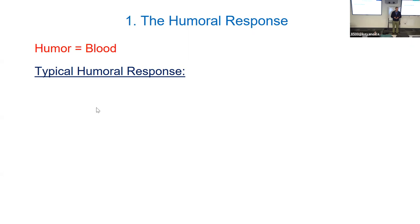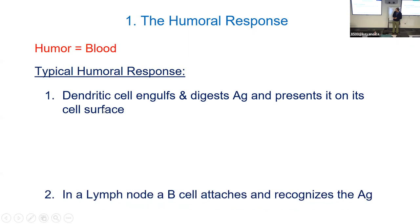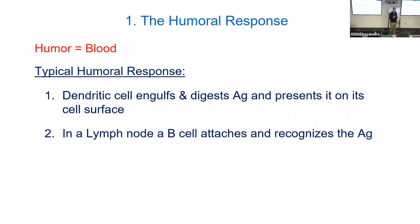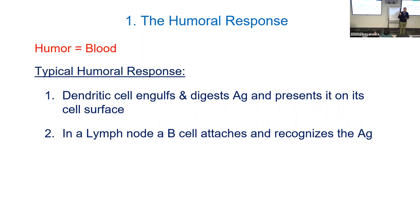That's not necessarily always the way this response works. Often this response also involves dendritic cells. Those dendritic cells are like security guards — if they see something suspicious, they hold on to it and allow other immune cells to make the decision whether to activate an immune response. They hold on to an antigen, present it, and are called antigen-presenting cells. It's the B cells that get activated and do something about it.